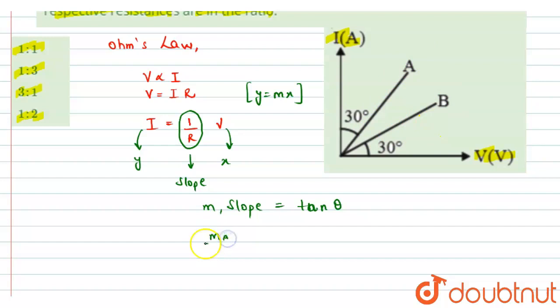So I can write M A over M B, slope of conductor A divided by slope of conductor B will be equals to tan theta of A divided by tan theta of B. And this will be equals to 1 over R A and 1 over R B.